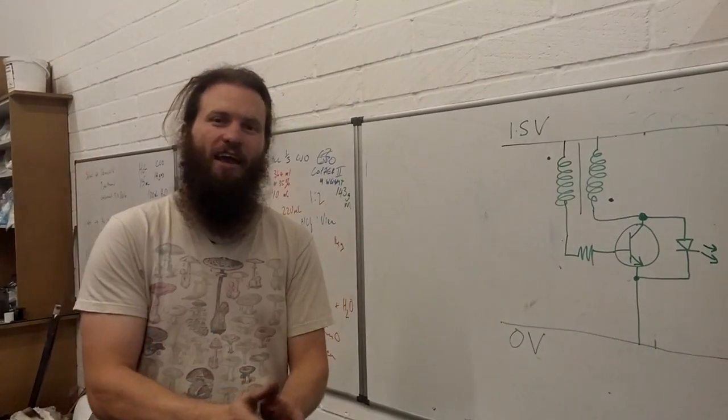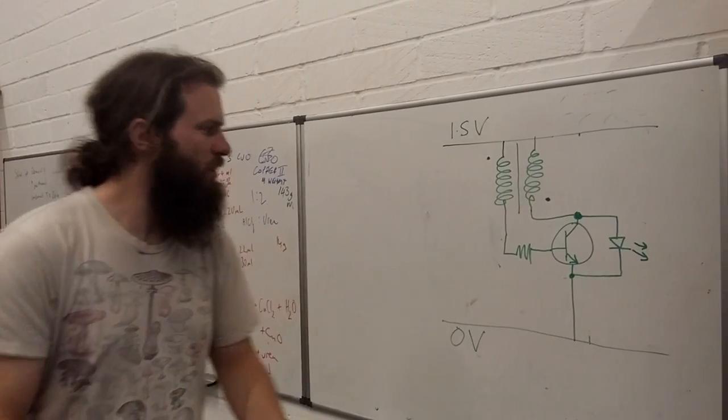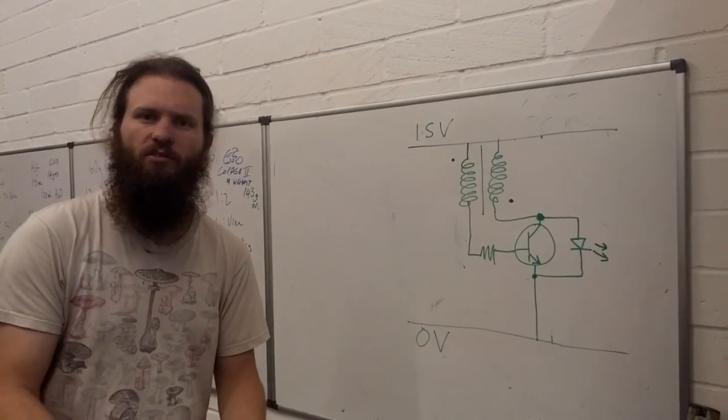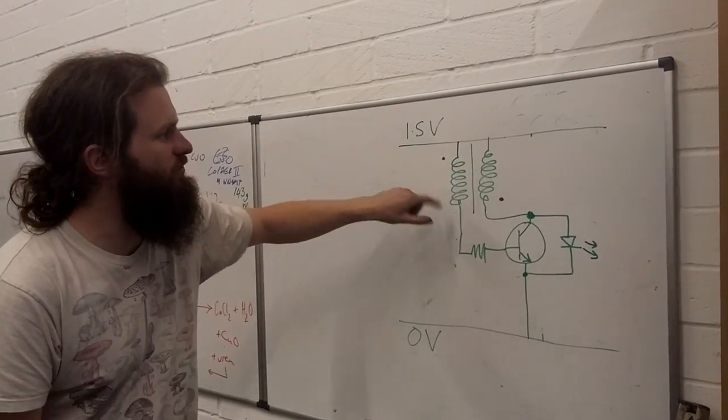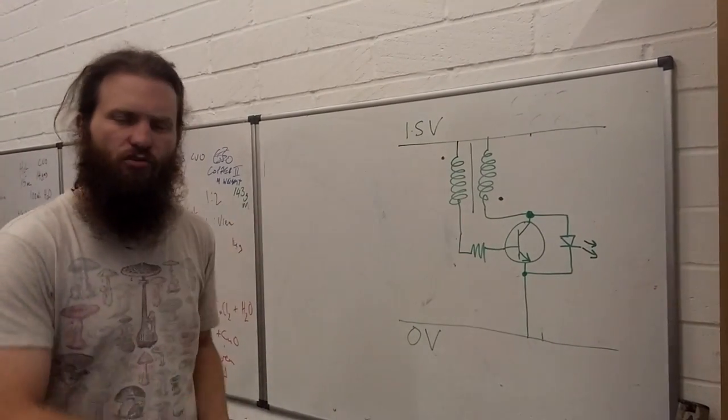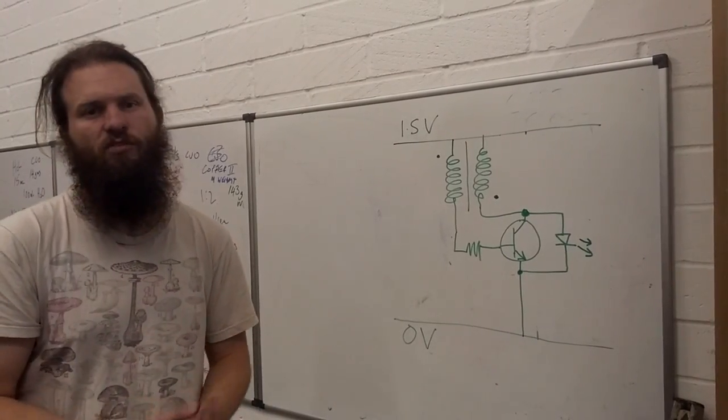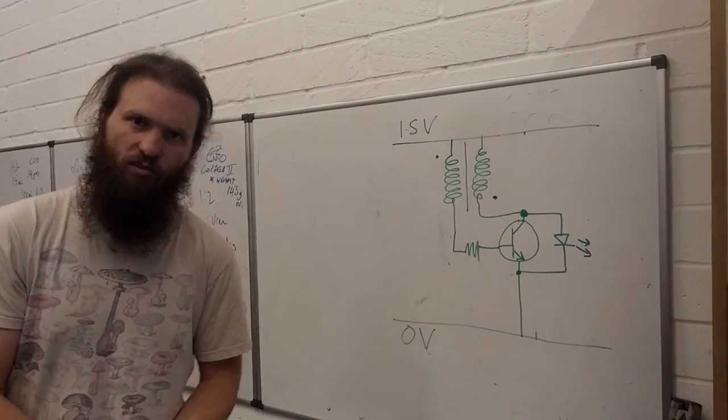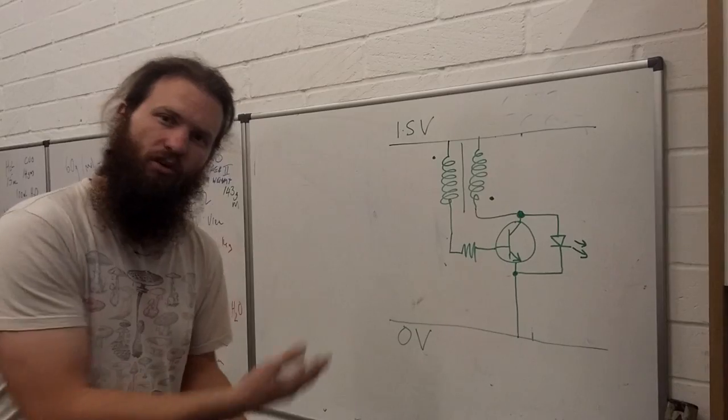So finally, as promised, I'm going to explain to you how the joule thief circuit works. You're already familiar with all the components required to understand. In this circuit diagram, up here we've got the transformer. The dots indicate the direction of the windings, which is important because that determines the direction of the electromotive force that's induced when you pass the current through. The reason for that will become clearer later on.